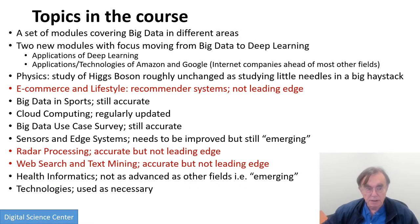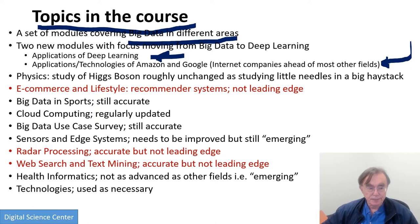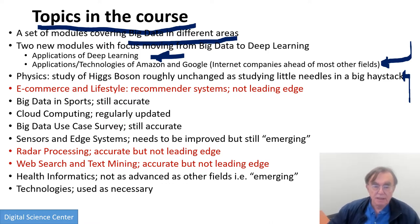Here we have the discussion of the topics in this course. It's a set of modules covering Big Data in different areas. There will be two new modules which I haven't written in detail yet: one on applications of deep learning and the other on the technologies of leading internet companies such as Amazon and Google. Then we have the older, more traditional module on Physics, which was probably the first one written and is still stable because physics changes slowly. It actually has the most data of any science problem at the moment, though the data relevant to the Higgs boson is little data — needles in a haystack.